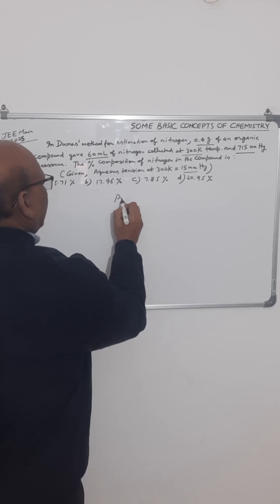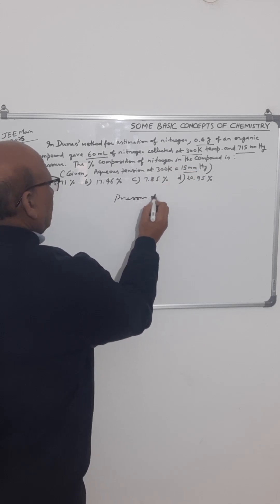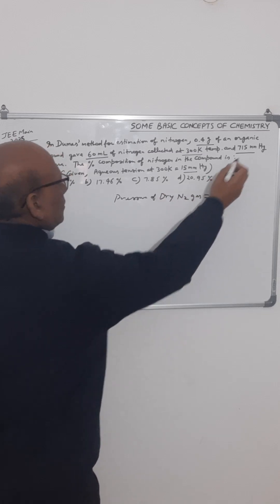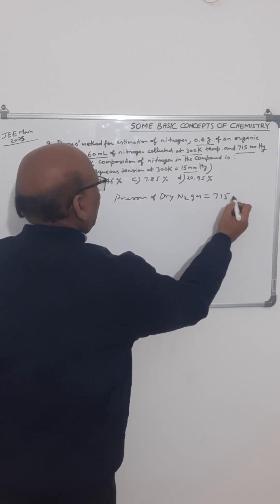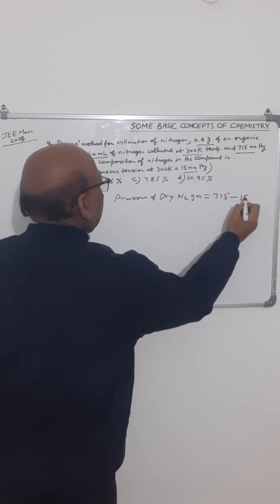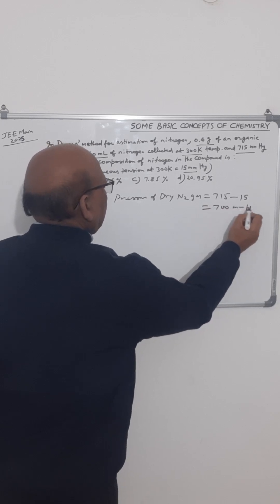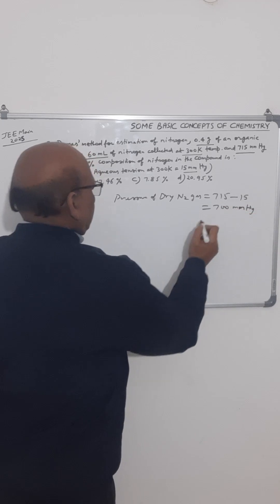So we have to find the pressure of dry nitrogen. The dry nitrogen pressure will be equal to the given pressure, that is 715 minus aqueous tension, that is 15. So this is 700 mm Hg. This is the pressure of nitrogen gas.